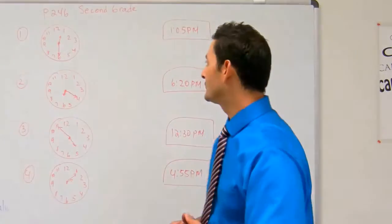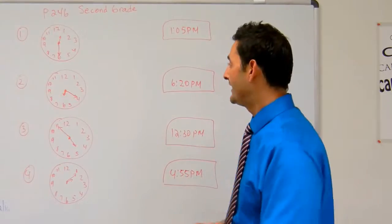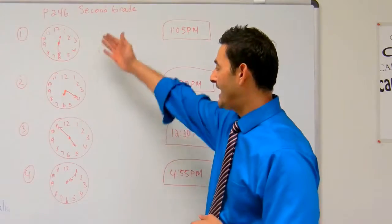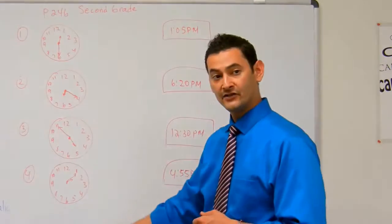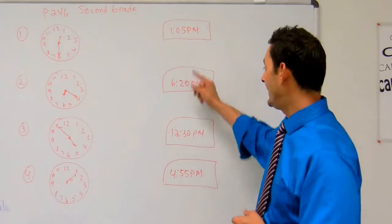Welcome back boys and girls. Let's go ahead and work on page 246 of your second grade hybrid math workbook. On the left hand column, I've got some analog clocks that have certain times on them. On the right hand column, I've got some digital clocks with the times as well.